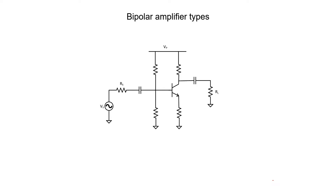Let's get started with a very typical arrangement for an NPN bipolar transistor. First, let's label the nodes or terminals of our transistor — which one's the base, which one's the collector, and which one is the emitter? If you recall that the arrow identifies the emitter, we can label that one right away — I'll write the letter E there for emitter. This would then be the collector, and over here we have the base.